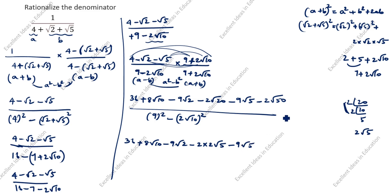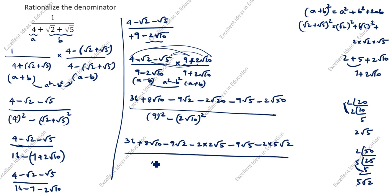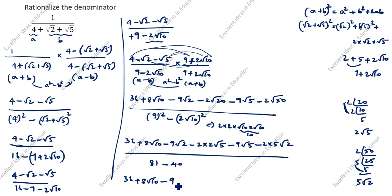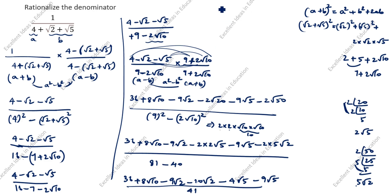So minus 2 root 20 becomes minus 2 into 2 root 5, which is minus 4 root 5. For root 50: 50 equals 2 times 25 equals 2 times 5 times 5, so root 50 is 5 root 2. Therefore minus 2 root 50 becomes minus 2 into 5 root 2, which is minus 10 root 2. Now combining like terms in the numerator: root 10 terms give 8 root 10, root 2 terms give minus 9 root 2 minus 10 root 2 equals minus 19 root 2, and root 5 terms give minus 4 root 5 minus 9 root 5 equals minus 13 root 5. So the numerator is 36 plus 8 root 10 minus 19 root 2 minus 13 root 5.